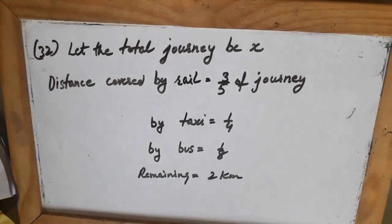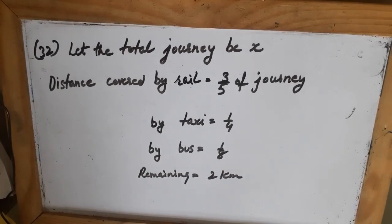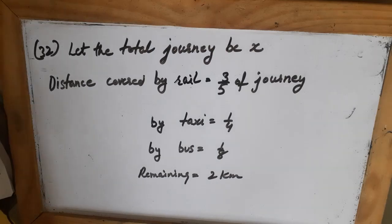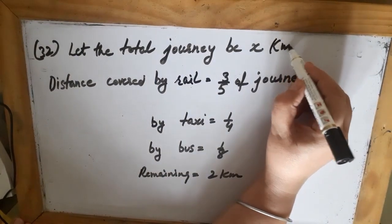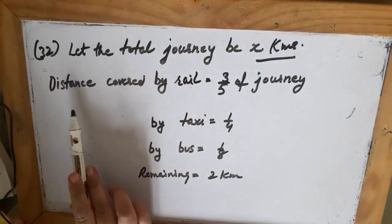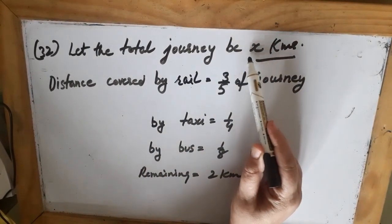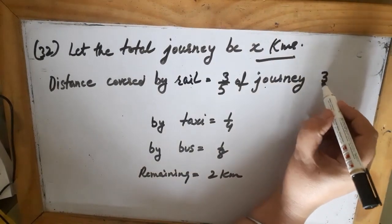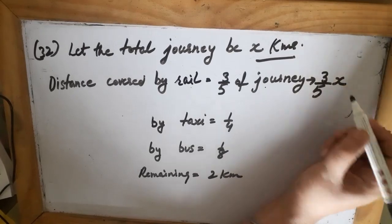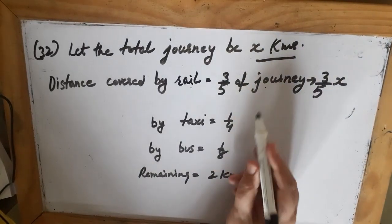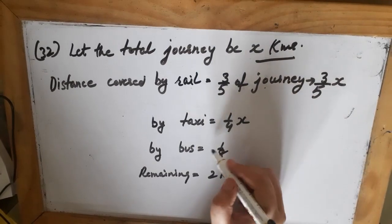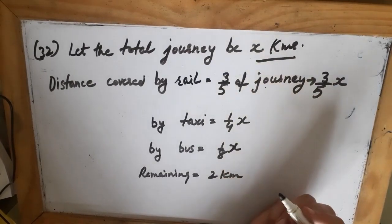Question number 32: a man travelled 3/5 of his journey by rail, 1/4 by taxi, 1/8 by bus, and the remaining 2 km on foot. Find the length of his total journey. Let the total journey be x kilometers. The distance covered by rail is (3/5)x, by taxi is (1/4)x, and by bus is (1/8)x. The remaining distance covered on foot is 2 km.